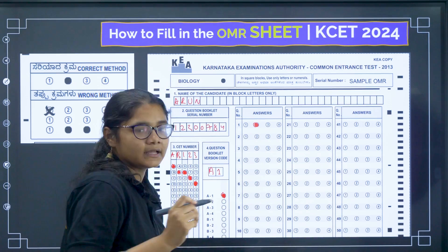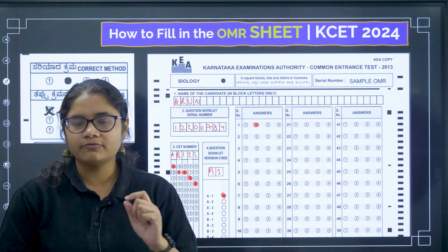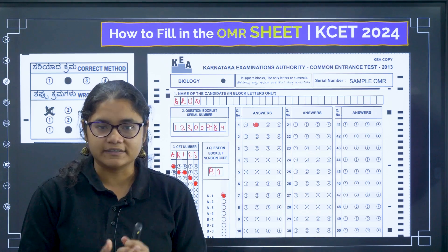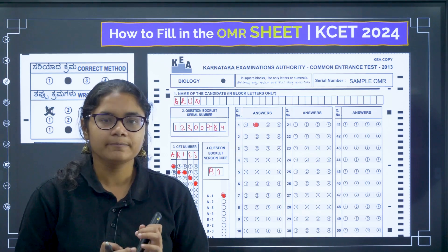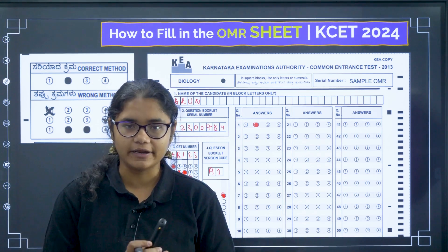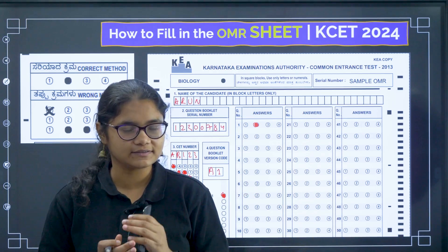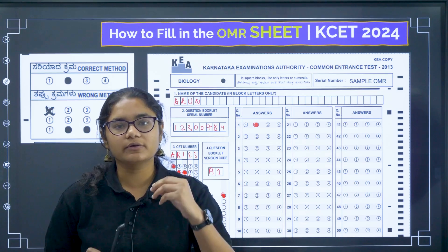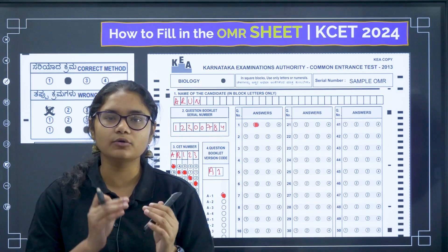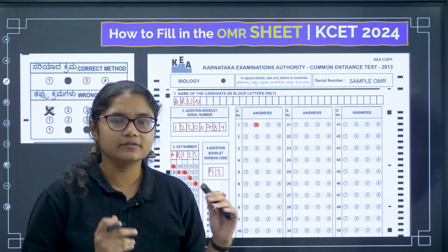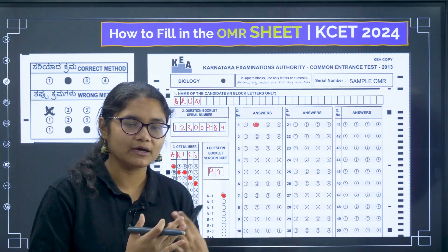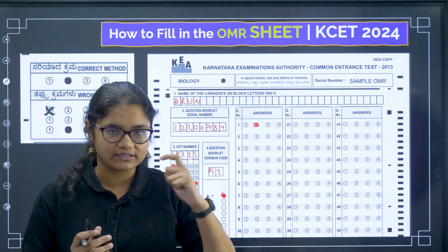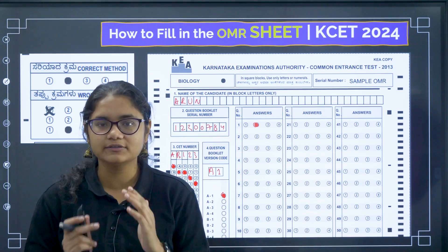Filling the OMR sheet correctly is very important — any mistake will mean your answer sheet is not evaluated and your results will be impacted. You will have 60 questions in the exam. The recommended strategy is to solve 20 questions first, then fill those bubbles, then the next 20, and so on. Do not leave all the bubbling to the end, as that creates panic and a time burden.